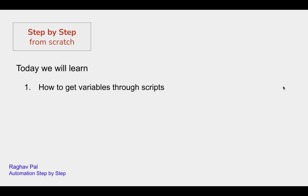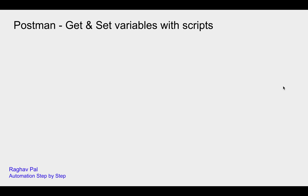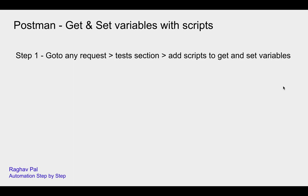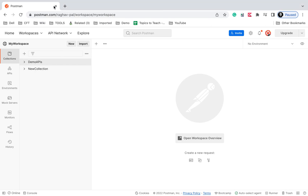Hello and welcome, I'm Raghav, and today we are going to learn step by step from scratch how to get and set variables using scripts in Postman. This is going to be very easy and very interesting. Step number one: we will go to any request and go to the test section of the request, and there we will write or add our scripts to get and set variables.